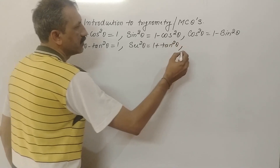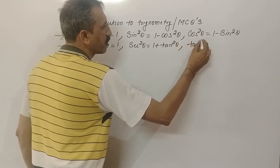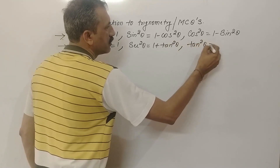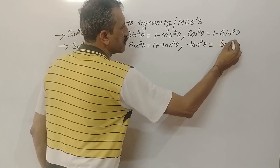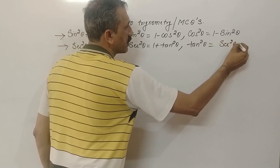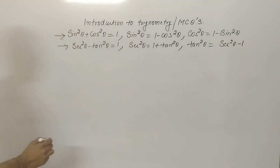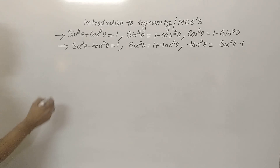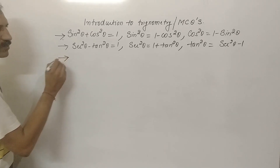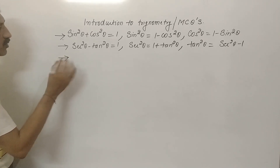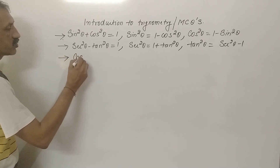Secant square theta is equal to 1 plus tan square theta, and tan square theta is equal to secant square theta minus 1. If you have multiple choice questions given in certain terms, you will know how to break the question.